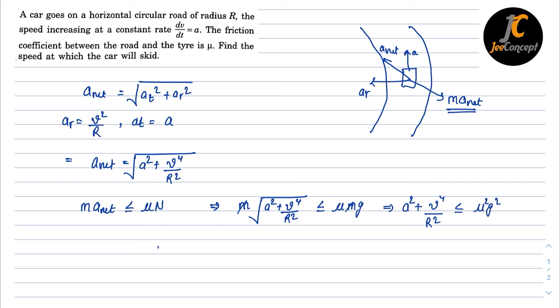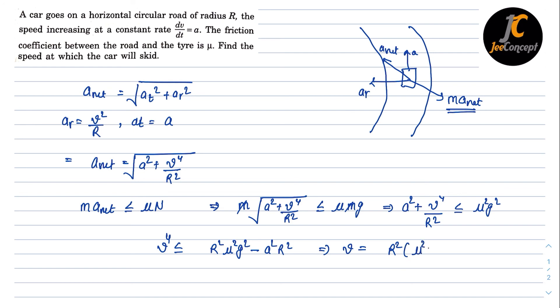So we will get the velocity value here. Velocity should be less than equal to R² μ² g² minus a² R². So this is power 4 so that means velocity should be equal to R² is common, μ² g² minus a² power 1/4. So this is the maximum velocity that we can give to this car to safely move along the circular path.